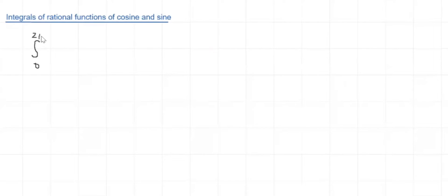In today's session we will be evaluating integrals of rational functions of cosine and sine. Residue integration can also be used to evaluate certain classes of complicated real integrals, and one type of integral is rational functions of cosine and sine. Suppose you have an integral from 0 to 2π of f(cosθ, sinθ) dθ, where f is a real rational function of cosθ and sinθ.